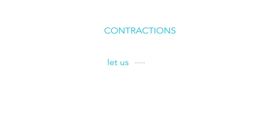Let's have a look at a less common one. 'Let us' becomes 'let's' by removing the U from 'us' and replacing it with an apostrophe. So that's using apostrophes for contractions. Sometimes it might be called omission. Omission means taking something out, which is what you are doing to the letters.